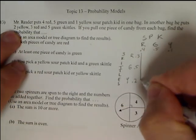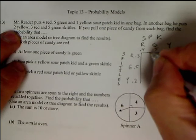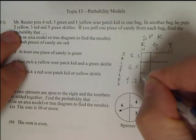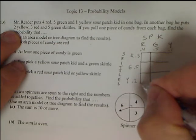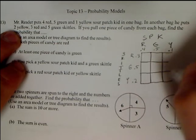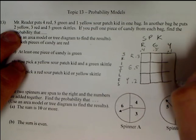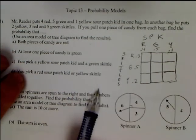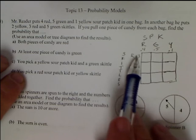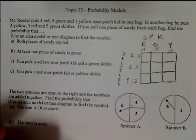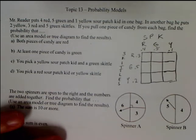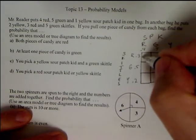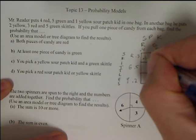Now we're going to calculate the area of each one of these possibilities. This square represents two reds, this one represents a red Sour Patch Kid and a green Skittle, and we break it all up. With an area model, we calculate the areas of each one. Both pieces of candy are red — that's 0.4 times 0.3. Multiply that out, you get 0.12.